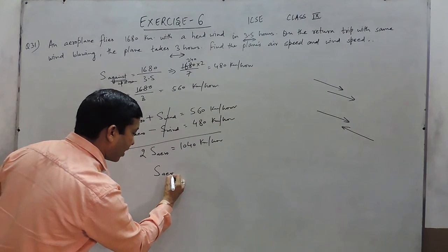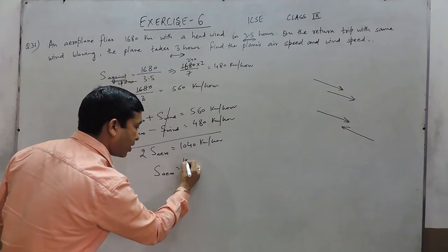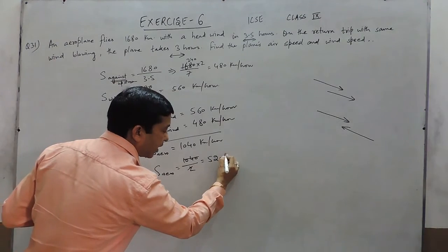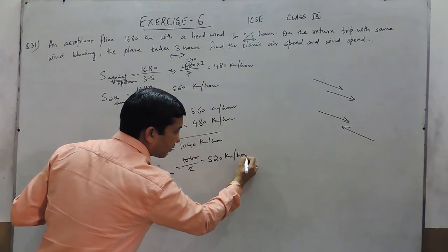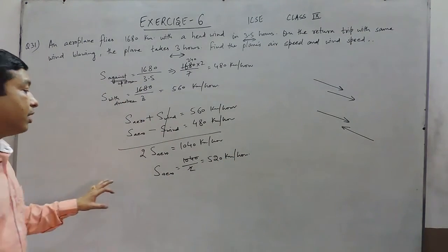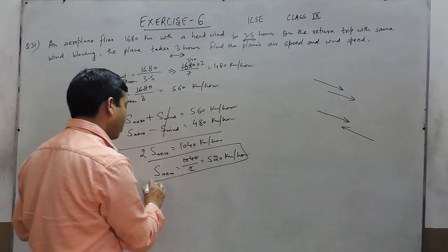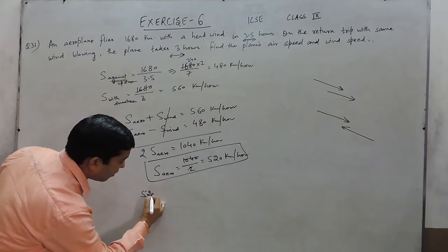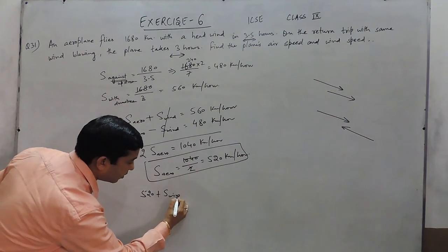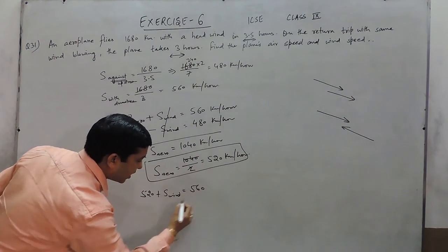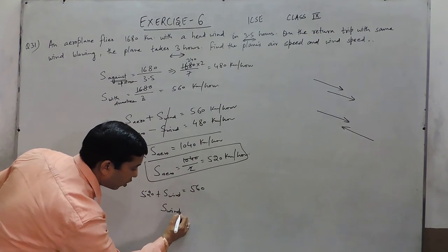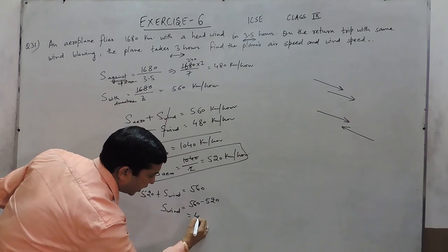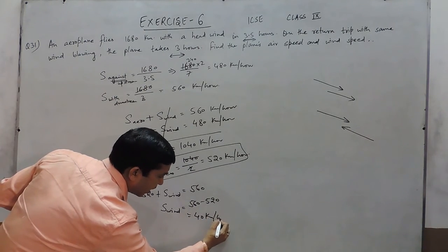So the speed of the aeroplane becomes 1040 upon 2, that means 520 km per hour. If we put this value in the first equation, then 520 plus the speed of the wind comes out to be 560, so the speed of the wind automatically comes out to be 560 minus 520, and that is 40 km per hour.